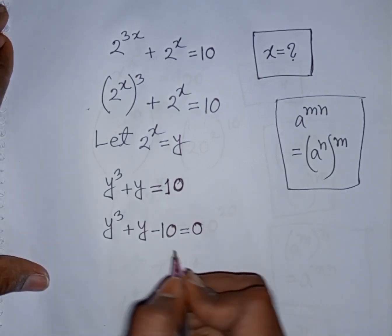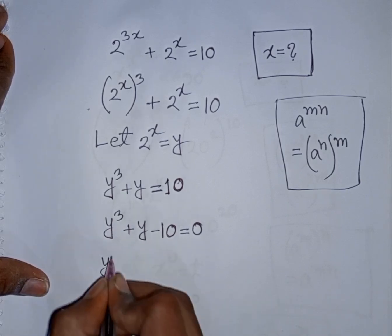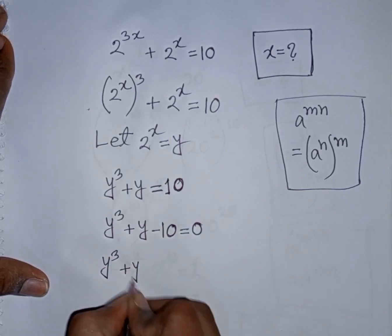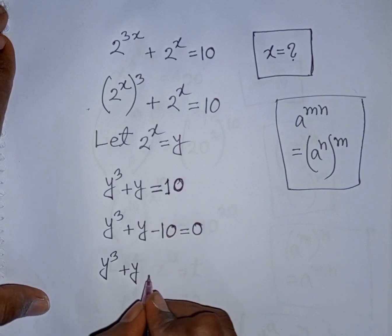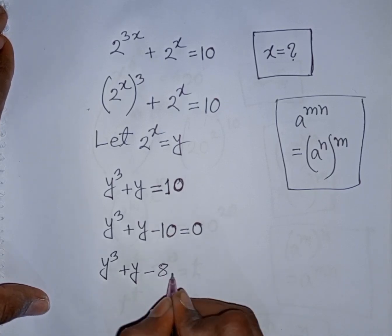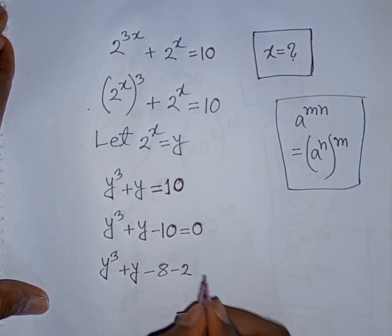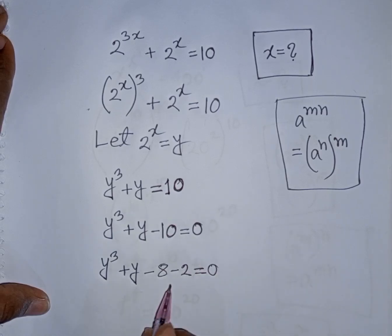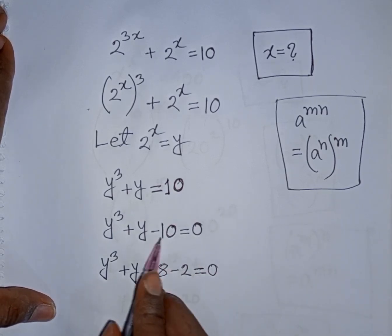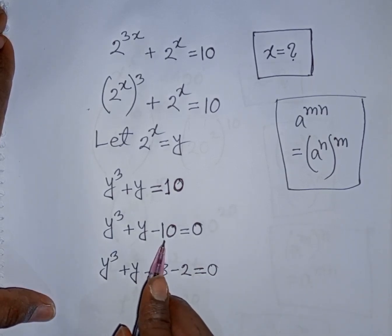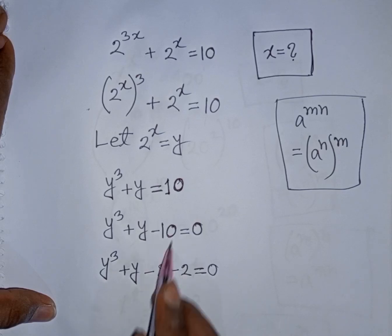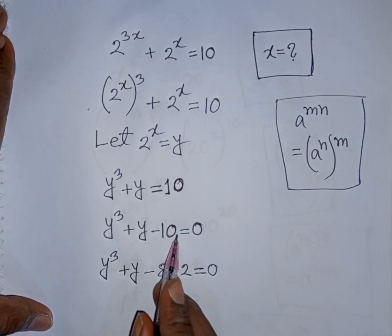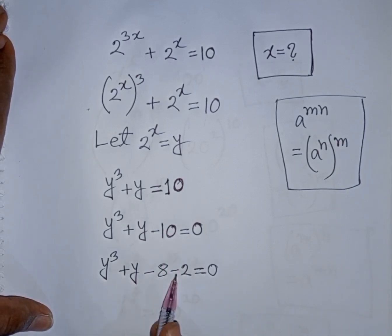Now y cubed plus y minus 10 can be rewritten by splitting minus 10 as minus 8 minus 2, giving y cubed minus 8 plus y minus 2 equals 0. The reasoning: the nearest perfect cubic number to 10 is 8, so minus 10 can be written as minus 8 minus 2. This technique is useful to recognize in such problems.